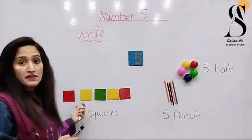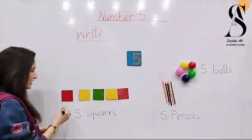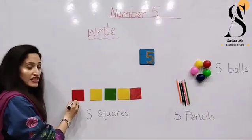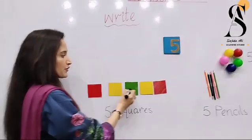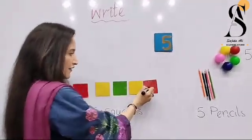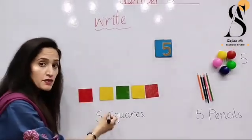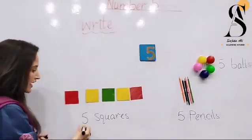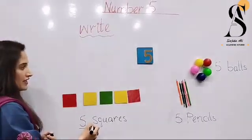Okay, let's count the objects here. You can see here, how many shapes? 1, 2, 3, 4, 5. We have 5 squares. How many squares do we have? 5 squares.